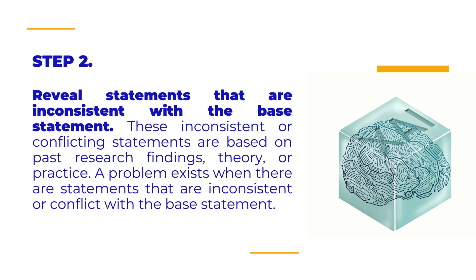The second step is to reveal statements that are inconsistent with the Base Statement. These inconsistent or conflicting statements are based on past research findings, theories, or practice. A problem exists when there are statements that are inconsistent or conflict with the Base Statement. These conflicting statements arise from past research findings, theoretical perspectives, or practical experiences that challenge or contradict the initial Base Statement. By identifying and highlighting these inconsistencies, the researcher demonstrates the existence of a problem that needs to be addressed, underscoring the complexity of the issue and justifying the need for further investigation.